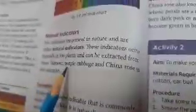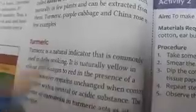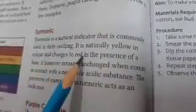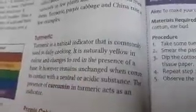Turmeric is a natural indicator that is commonly used in daily cooking. It is naturally yellow in color and changes to red in the presence of base. When you add base, it will change to which one? Red.